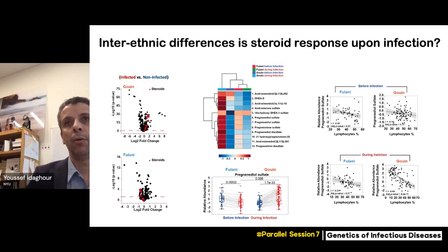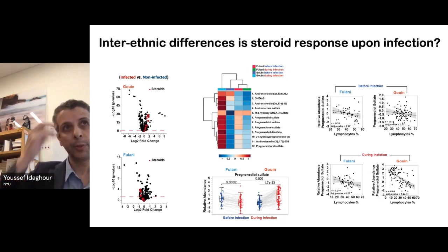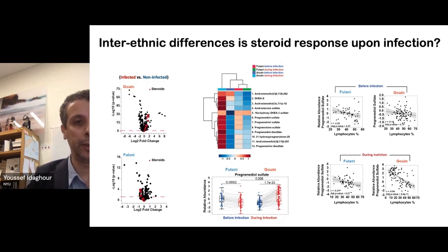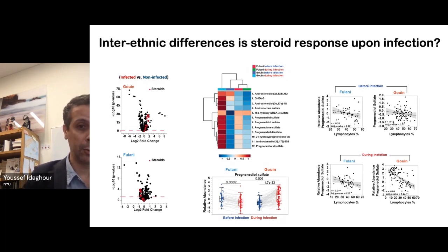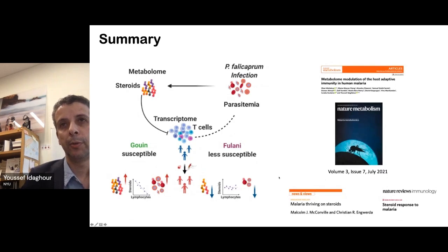As a summary, the model we're proposing is that in the Guan ethnic group there is elevation of steroids associated with infection and parasitemia, which has an inhibitory effect on T-cell function and potentially other cells, which can also affect parasitemia. We see opposing trends in the Fulani — the negative correlation between steroids and lymphocytes seen in the Guan is absent in the Fulani. These results have been published in Nature Metabolism in July and attracted a lot of attention from the community, including commentaries from the immunology and infectious disease fields.